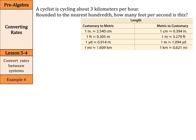A cyclist is cycling about 3 kilometers per hour — rounded to the nearest hundredth, how many feet per second is this? So we were just going one unit at a time, but now we're going to complicate things by converting both the top and the bottom. Let's start with what we're given: 3 kilometers in 1 hour. We need to get our hours into seconds and our kilometers into feet, going from kilometers per hour into feet per second. Let's do our time unit first.